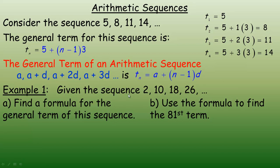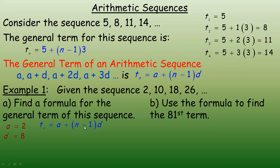We're going to use that in this example. We're given the sequence 2, 10, 18, 26 and asked to find the formula or general term for this sequence. The first term is 2, so a equals 2. From 2 to 10 the difference is 8, so the common difference d equals 8. We write out the general term for any arithmetic sequence and tailor that formula for this specific one, filling in 2 for a and 8 for d.